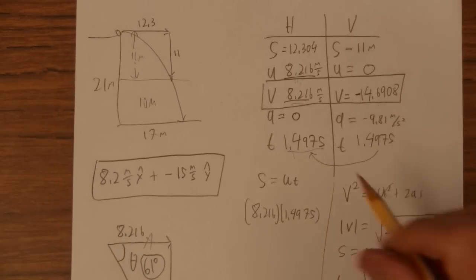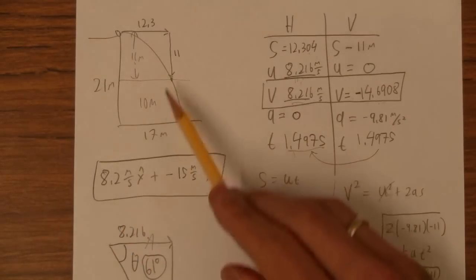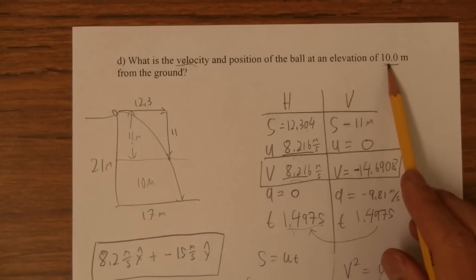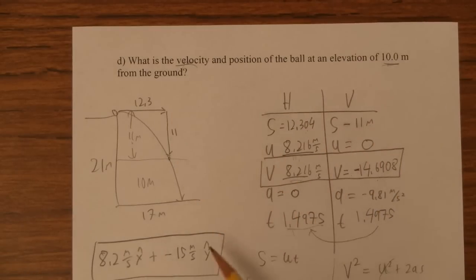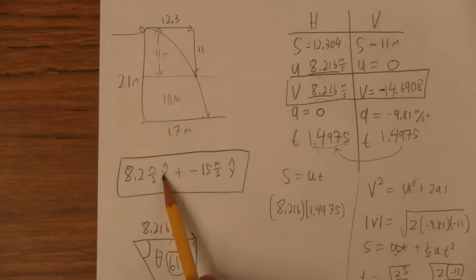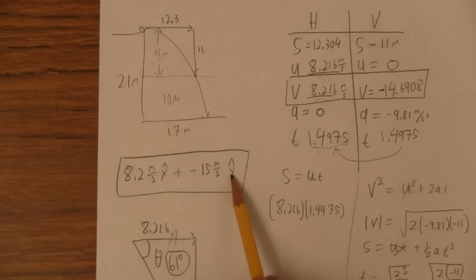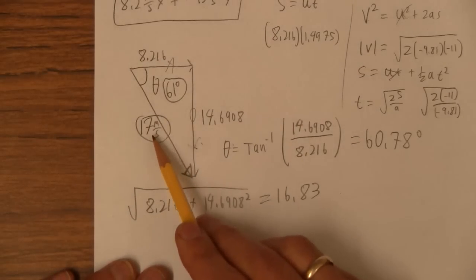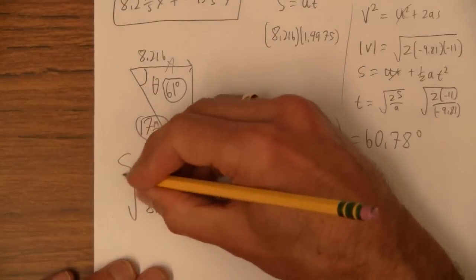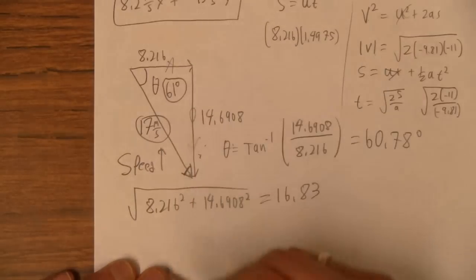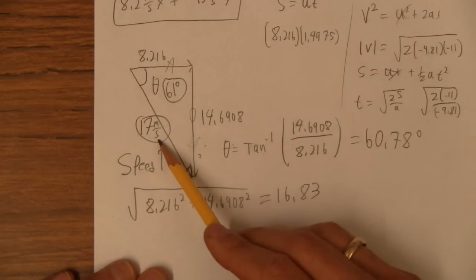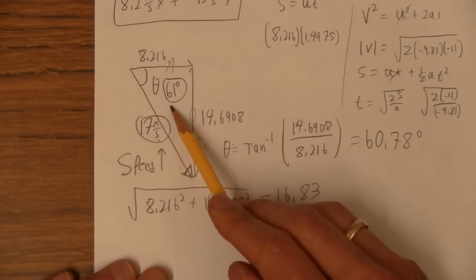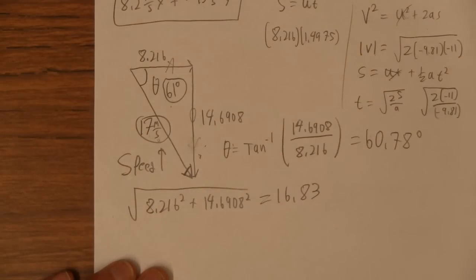So we've answered the question. Its position is 12.3 over 11 down when it's 10 meters above the ground that was pretty obvious. It'd be 11 down anyway. Its velocity is 8.2 meters per second in the x direction. Negative 15 meters per second in the y direction approximately. And then if we bust that out. That's actually 17 meters per second. This is the speed. If they ask you what's the speed of the object when it's there. It's 17 meters per second. What's its velocity? Well it's 17 meters per second at an angle of 61 degrees below the horizontal. That's not so bad is it?